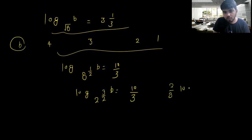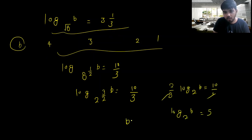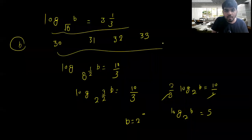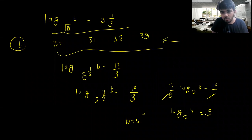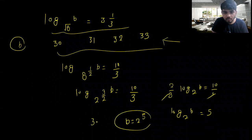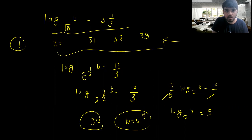Using the log property, with the given value of 10/3, we have log of b at the base equal to 5. If I write the power of b as a power of 2, then b = 2⁵ = 32. So 32 is the right answer here.